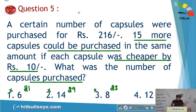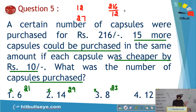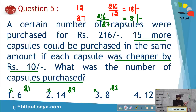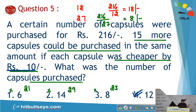Verification: If 12 items were purchased, total spent = 216 rupees, so price = 216/12 = 18 rupees. If 27 items purchased, price = 216/27 = 8 rupees. Reduction = 18 − 8 = 10 rupees, which matches exactly. So 12 is confirmed as the answer.